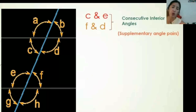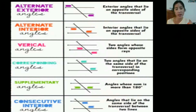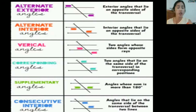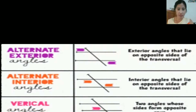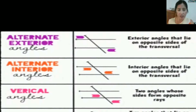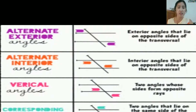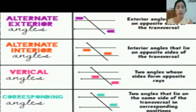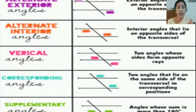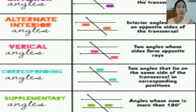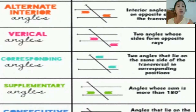Here we go with the summary. We are done with the angle pairs formed when parallel lines are cut by a transversal. Remember, the first thing in the list is alternate exterior angles, followed by alternate interior angles, then vertical angles, corresponding angles, supplementary angles, and consecutive interior angles.